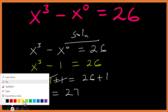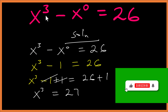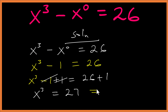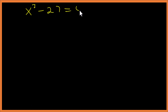Now if we decide to just take the cube root of both sides, it will limit the solutions. X to the power 3 has 3 solutions, so we need to find all of them. From here we can say x cubed minus 27 equals to 0.